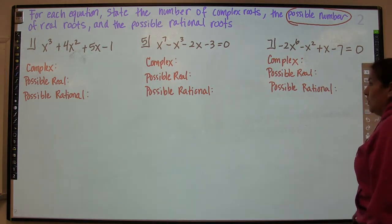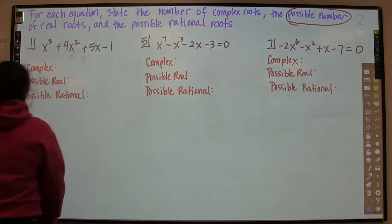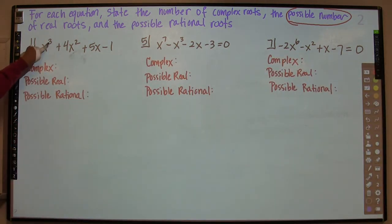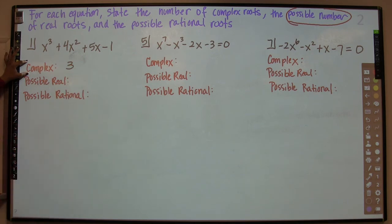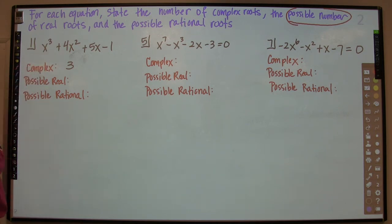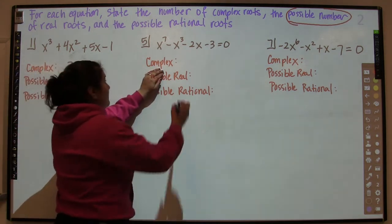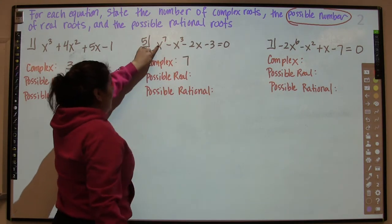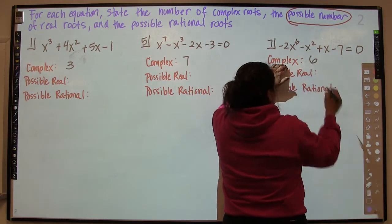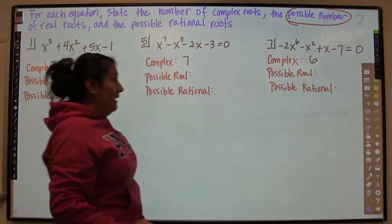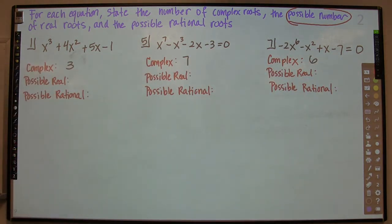Number one: complex. Because this is an x to the third, that means complex includes everything, so I am going to have three total roots. Complex will always equal the degree of the polynomial. So for number five, complex would be seven because it's x to the seventh. For number seven, complex would be six because it's x to the sixth. That is how simple the first part of these questions is.